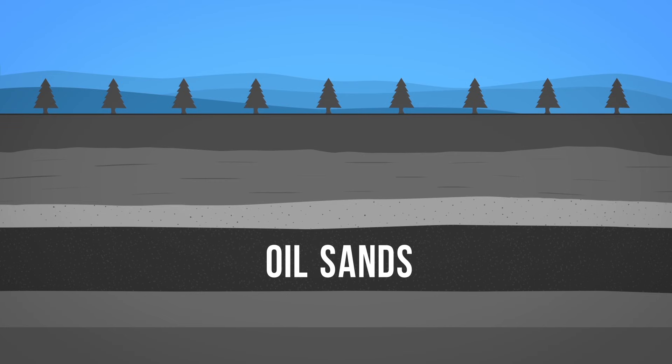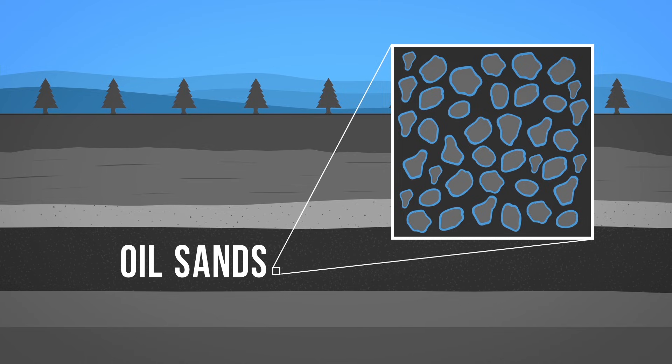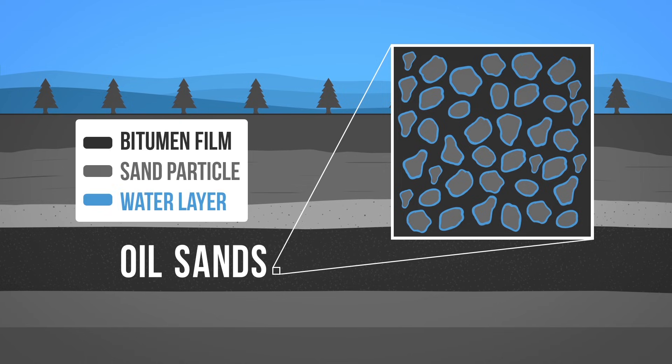Oil sands, or as it has been dubbed by some, tar sands, refers to the mixture of sand, clay, and water that contains naturally occurring extra heavy crude oil known as bitumen.